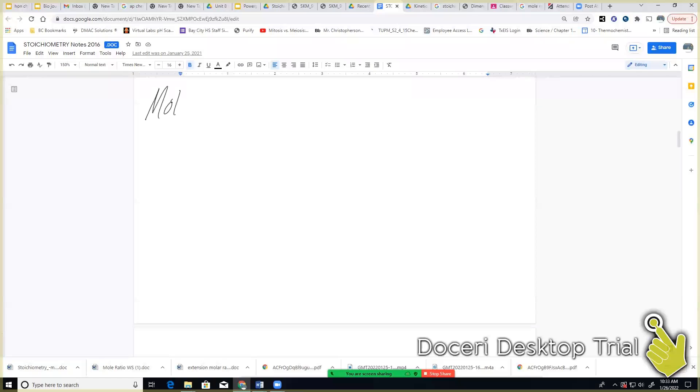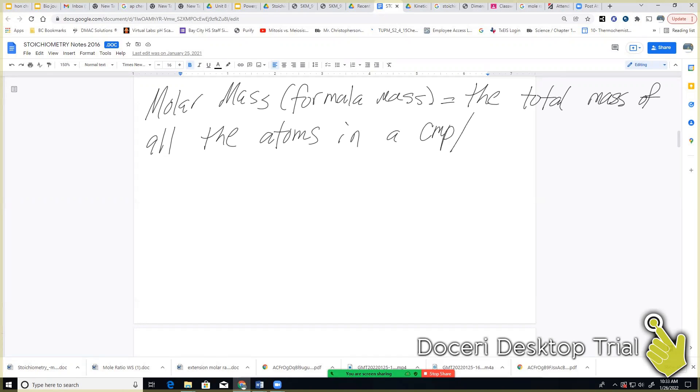So molar mass, sometimes called formula mass, is the total mass of all the atoms in a compound or element. Remember, you are going to be taking your numbers off the periodic table, and you need to round them to two places past the decimal. And then when you add them all up that also needs to be two places past the decimal. That's probably the thing where people make the biggest mistake, is the rounding.